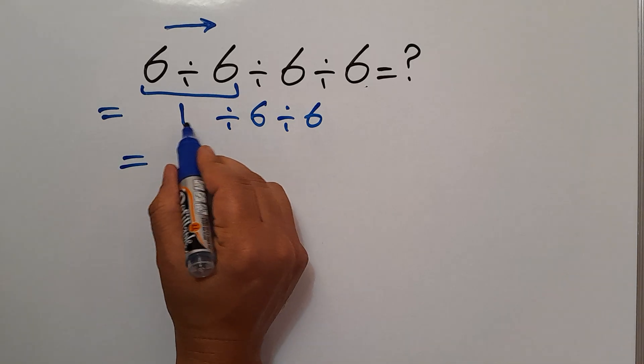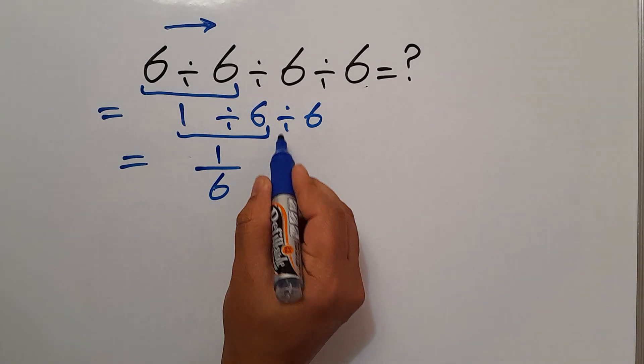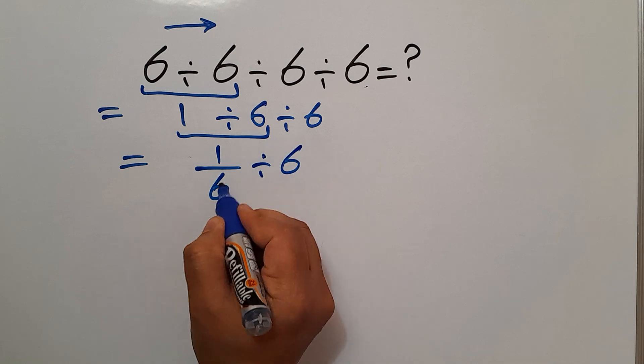Now, 1 divided by 6 can be written as 1 over 6 and divided by 6.